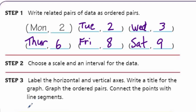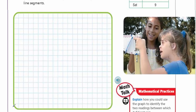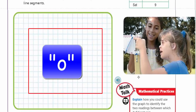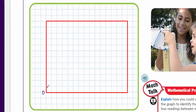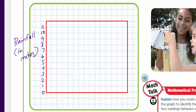Monday had two inches, Tuesday two inches, Wednesday three inches, Thursday — and step two says choose a scale and interval for the data. For the vertical axis, rainfall collected, using an interval of one makes sense since the numbers get larger but don't exceed nine inches. I'll label the vertical axis: zero, one, two, three — more than enough room. This is the rainfall in inches.